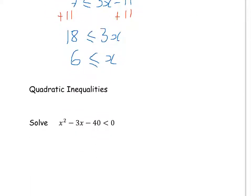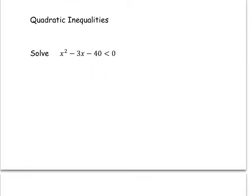Another example. This time I'm going to look at solving a quadratic inequality, and I don't think you've done this at all at GCSE. So, solve x squared minus 3x minus 40 is less than 0. We're going to factorize here to find two solutions of x that make this equal to 0.